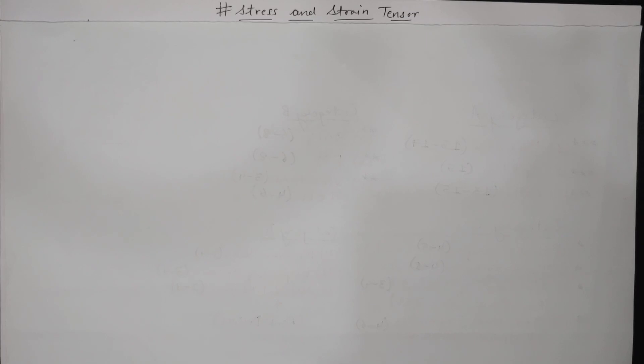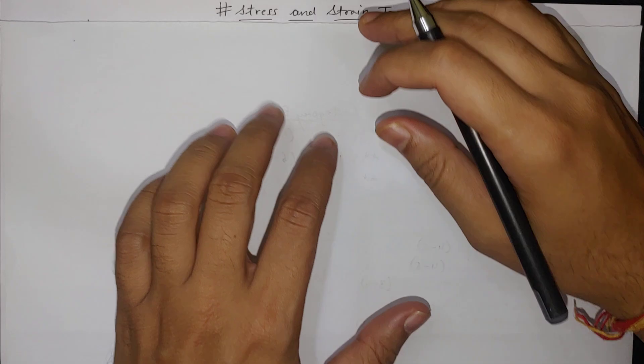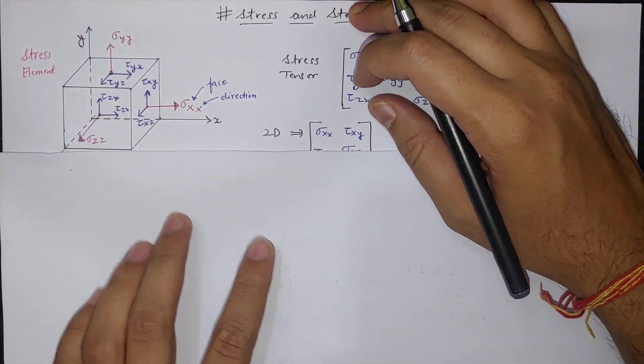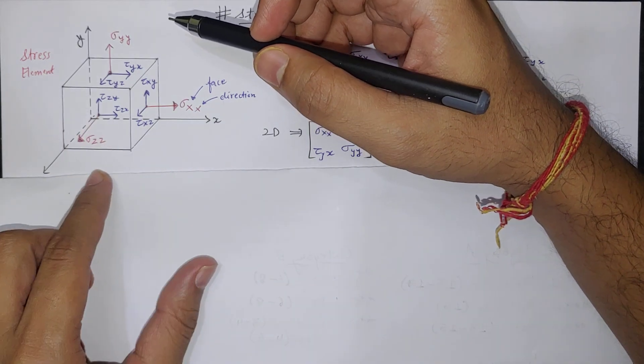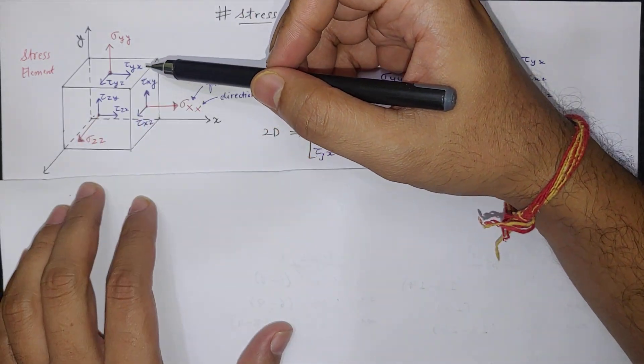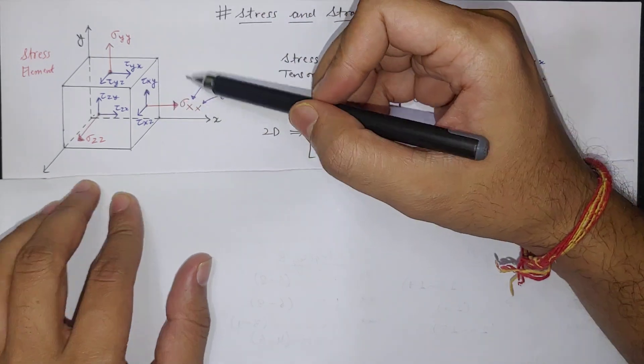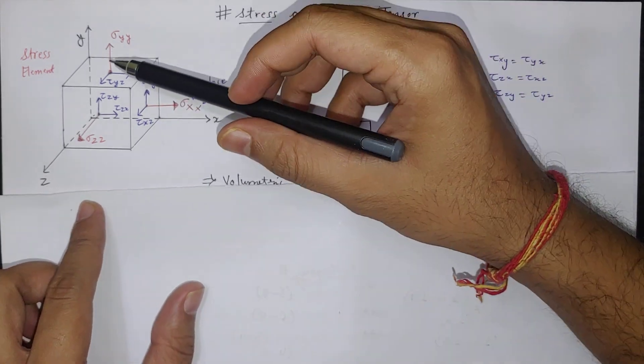In this video we will see stress and strain tensor. So here if you see this is a stress element. So for all the planes we have to define like a cube and now there are three directions X, Y, and Z.